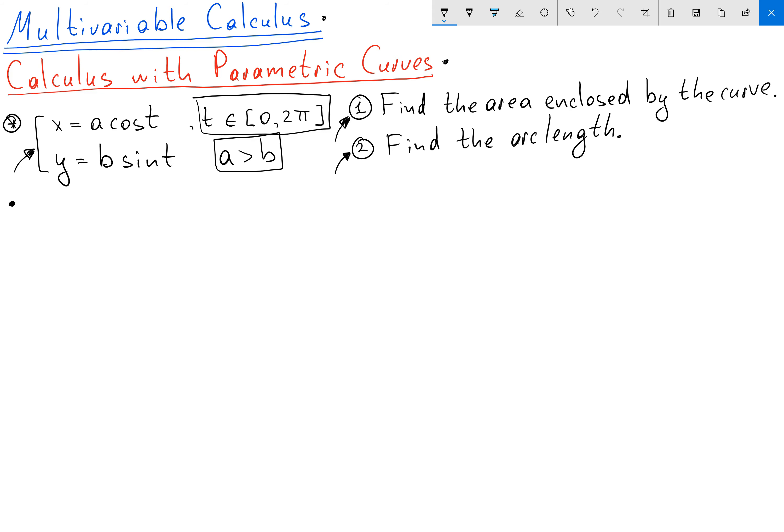The first thing that we can do is eliminate the parameter. We're going to take two equations and first equation divide both sides by a, and second equation divide both sides by b. So we'll have x over a equals cosine t and y over b equals sine t. Then I'm gonna square them up so we'll have x over a squared plus y over b squared equals cosine squared t plus sine squared t which equals 1.